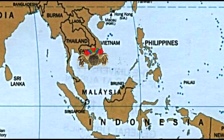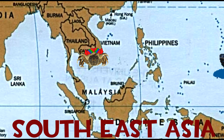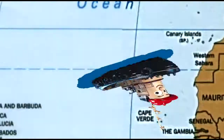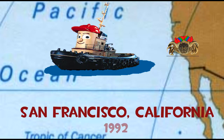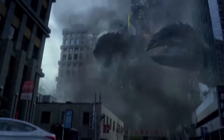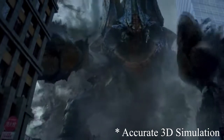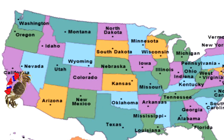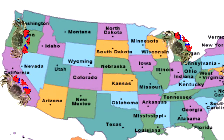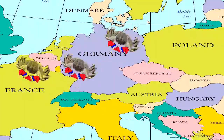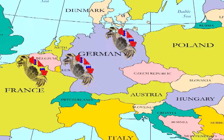The Mitten Crab was native to Southeast Asia, until a vessel accidentally transferred a few of them towards San Francisco in 1992. The crabs would soon invade other states in North America a couple years later, such as Oregon and Michigan. During this time, they would also invade European countries, particularly Germany.